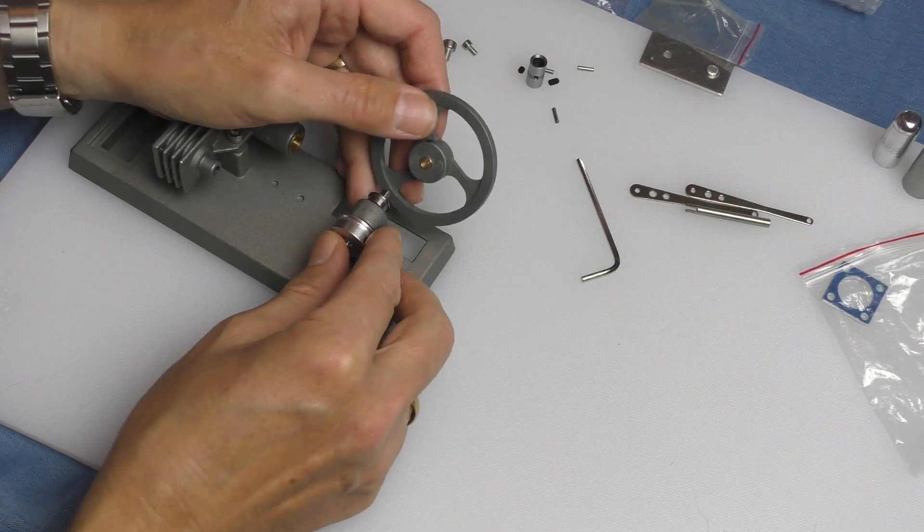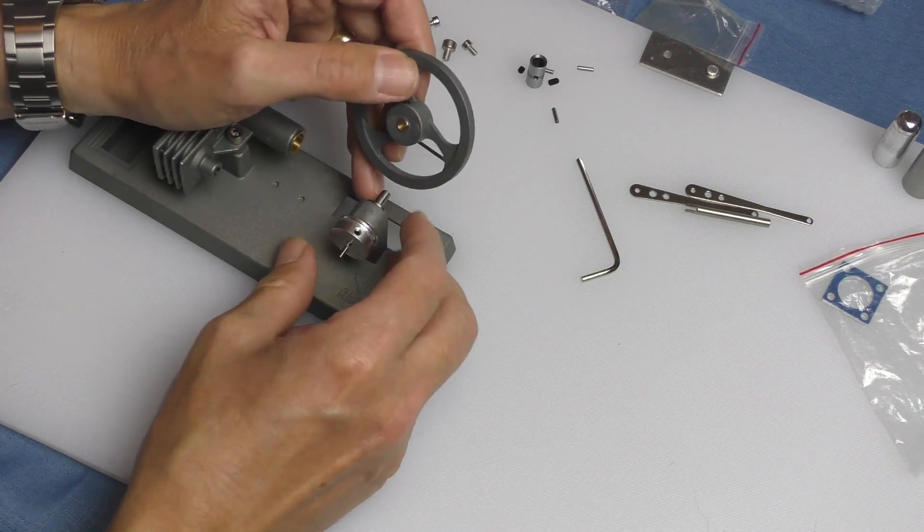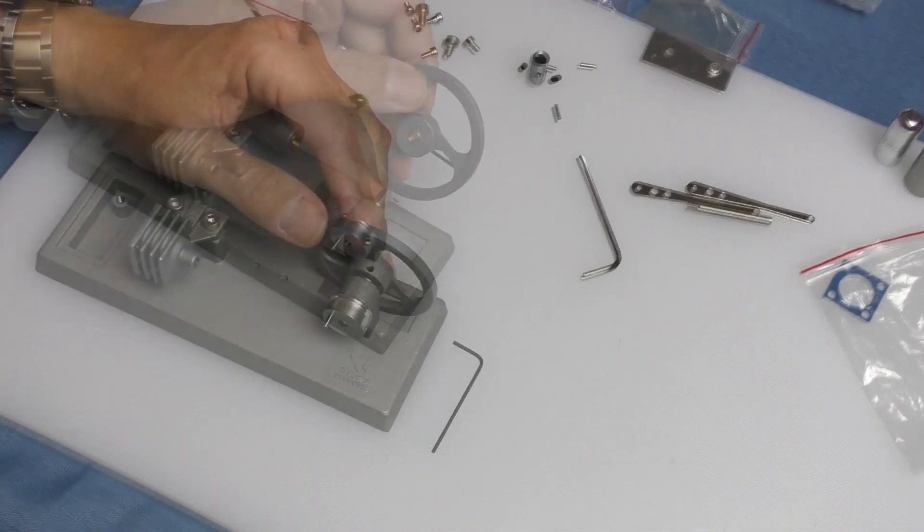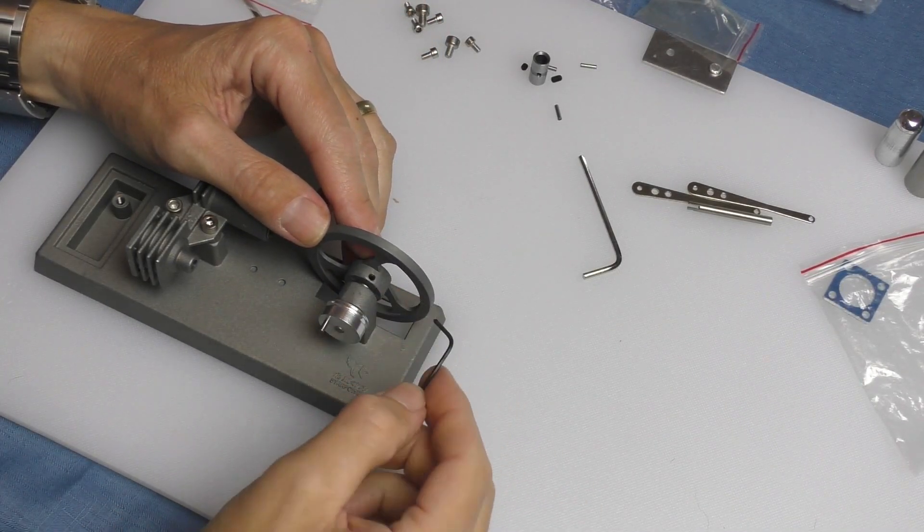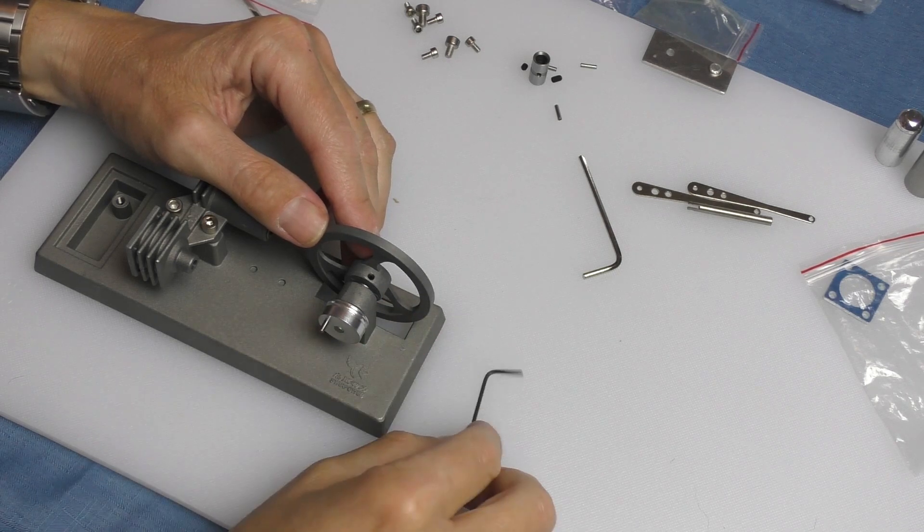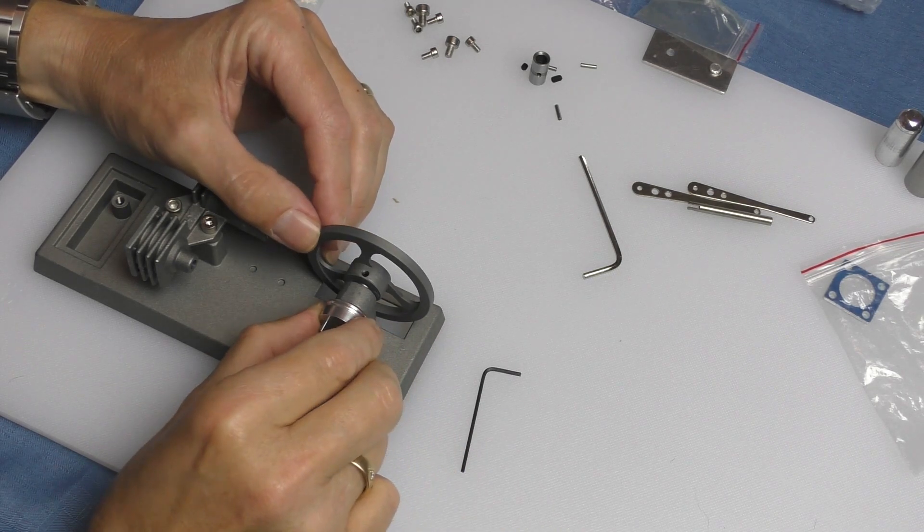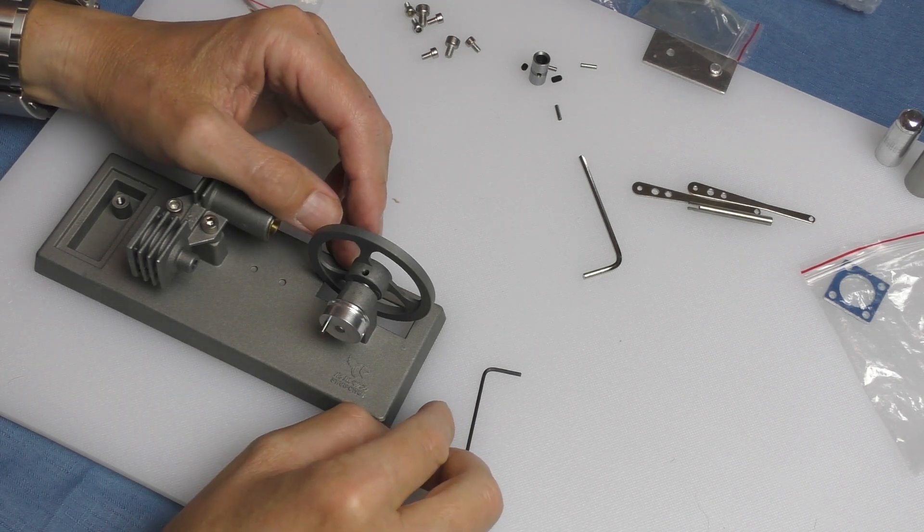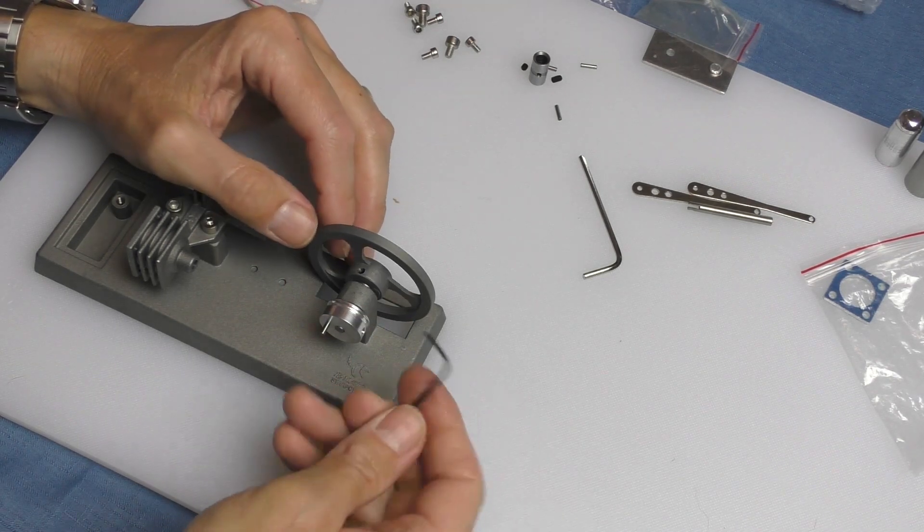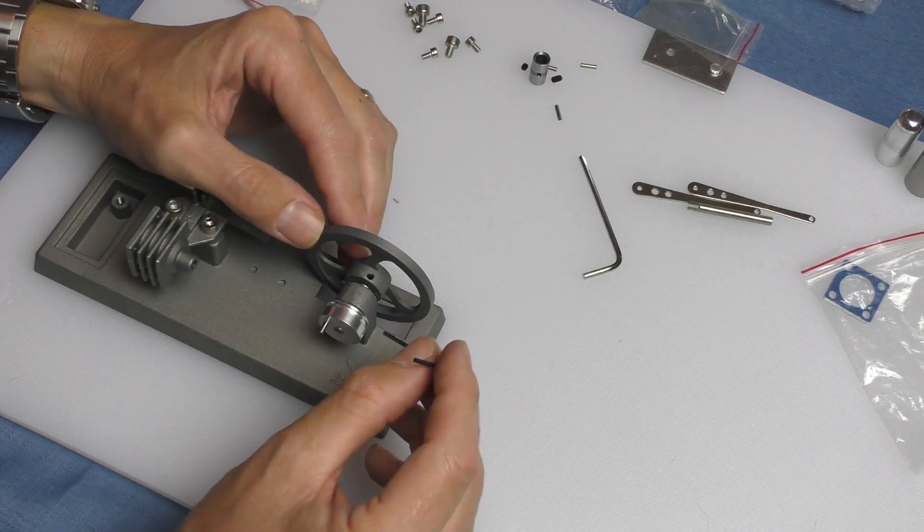I thought that would just be drilled through but obviously not. I've done that grub screw up as hard as it will go. I don't want to break the allen key but that still isn't locking because there's no hole in it. That's a bit odd, isn't it? I'm finding that a little bit odd to be honest.